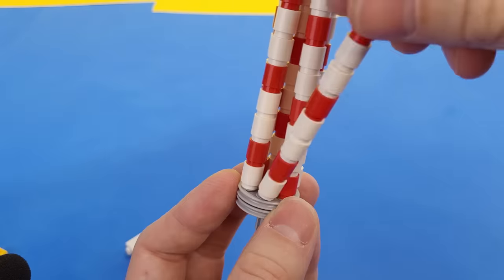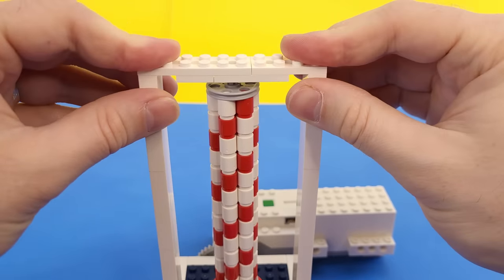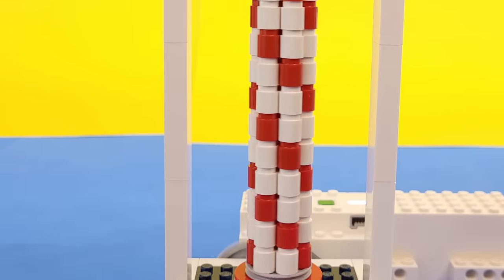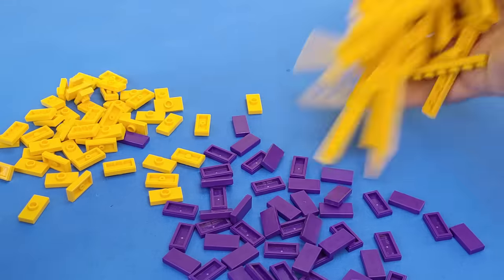Since that one turned out pretty good, I decided to make a few other versions as well. This one uses cylinder pieces that I tried to make look like a cool candy cane. However, it doesn't look quite as good as the first one in my opinion. However, this last version is the best.